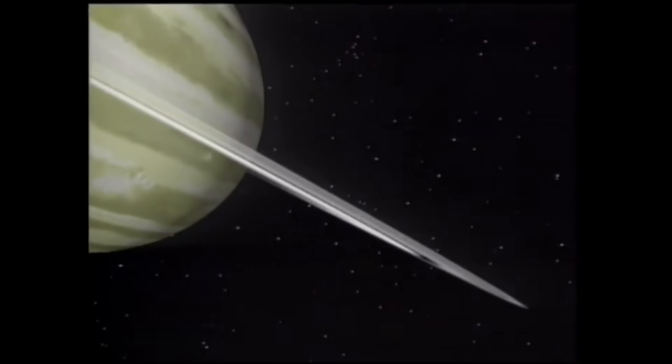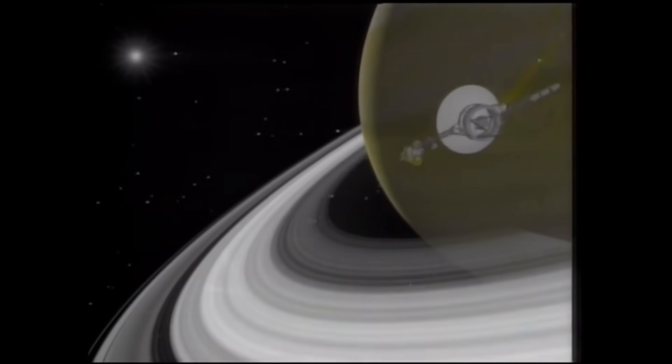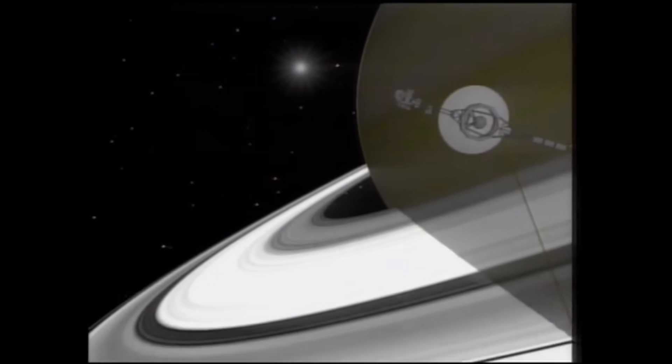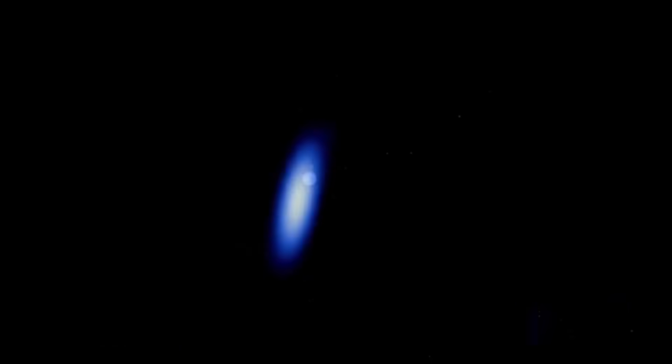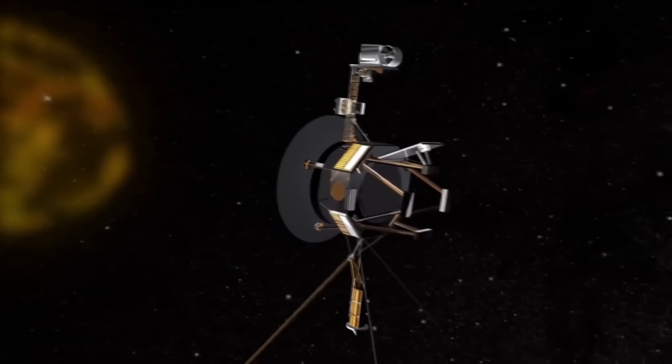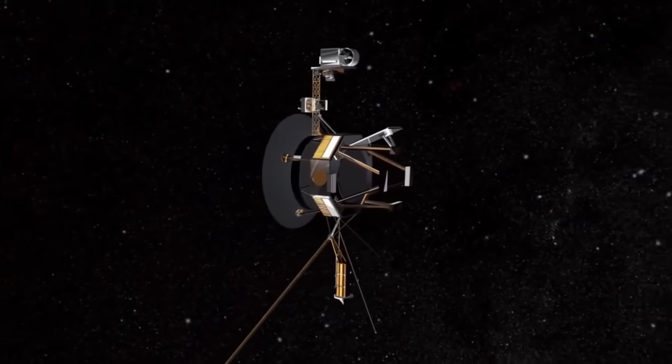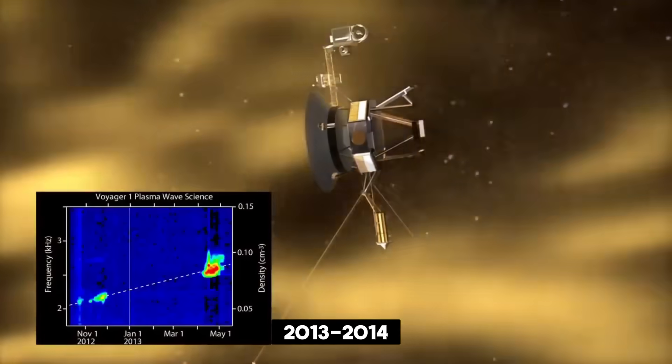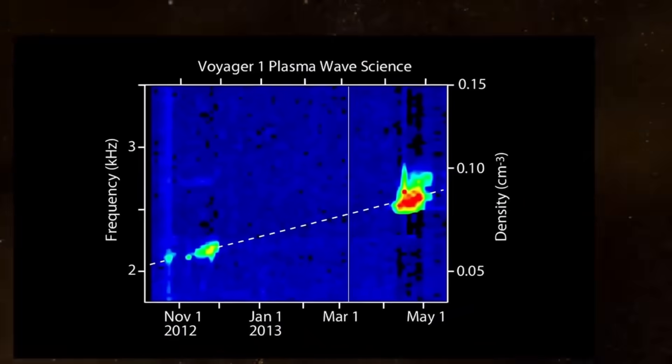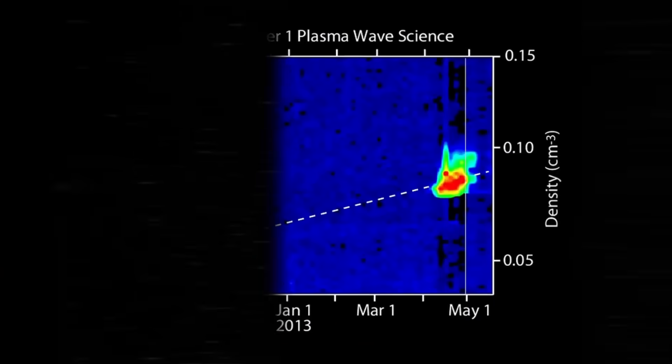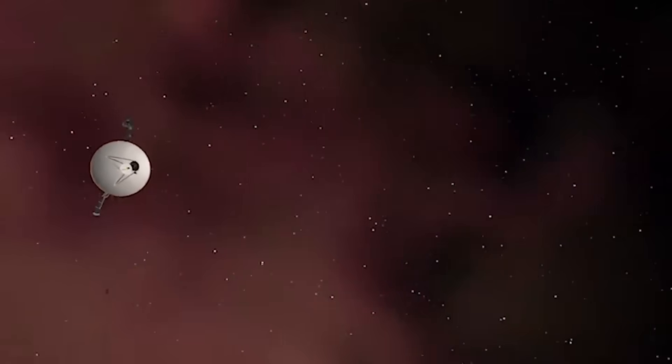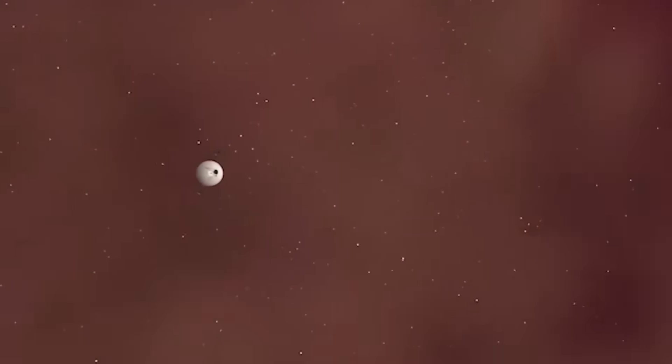In 1980, as Voyager approached Saturn, it detected unusual oscillations in the planet's rings that defied explanation for years. In the late 1990s, Voyager recorded inexplicable dropouts in cosmic ray readings. Brief moments when these interstellar particles seemed to vanish completely. Even more compelling were the intermittent plasma wave spikes detected in 2013 to 2014, just after Voyager crossed into interstellar space. These microbursts suggested unknown shock waves or disturbances in the void between stars.